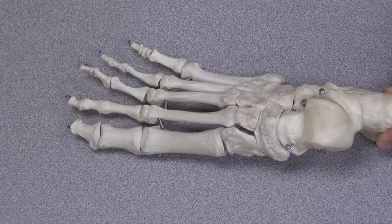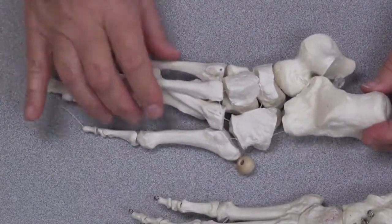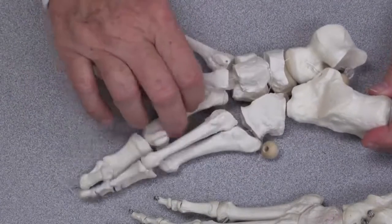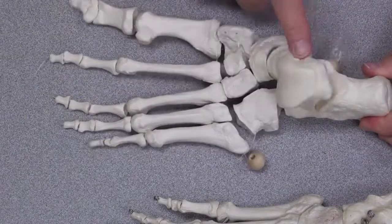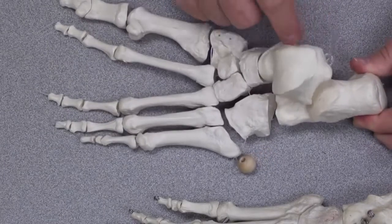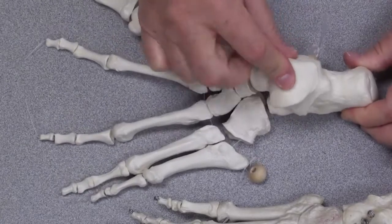Let's take a look at a loose skeleton of the foot and see if we can learn anything new that we can't tell in the one that's all wired up. This is the talus. You can see that it should rest on the calcaneal bone.